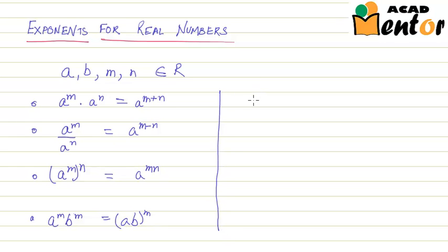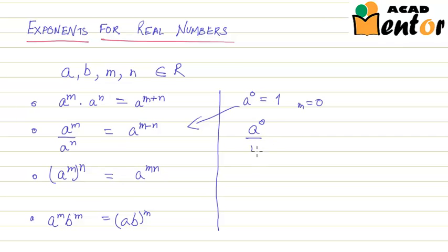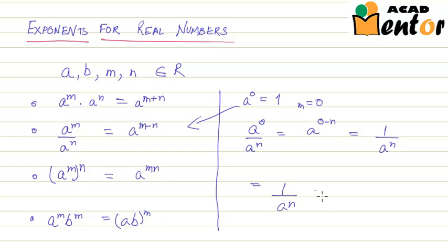We also know that a to the power 0 is nothing but 1. If you put m equal to 0 in the second property, you will get a to the power 0 upon a to the power n, equal to a to the power minus n. Also, this would be equal to 1 upon a to the power n. So 1 upon a to the power n is equal to a to the power minus n.